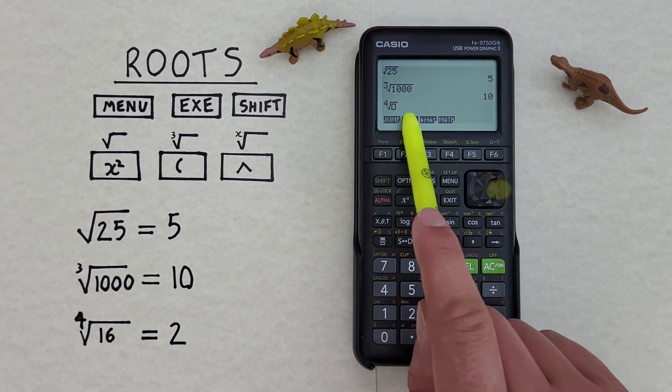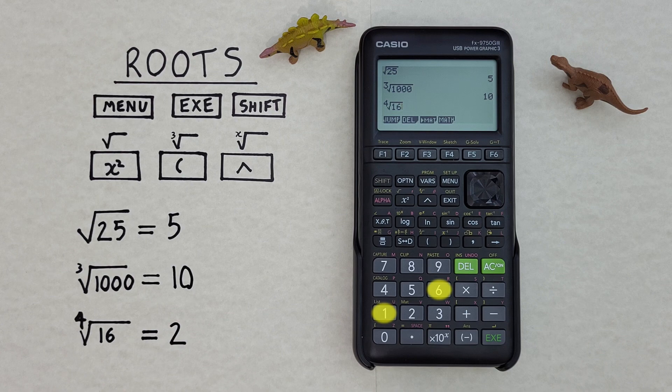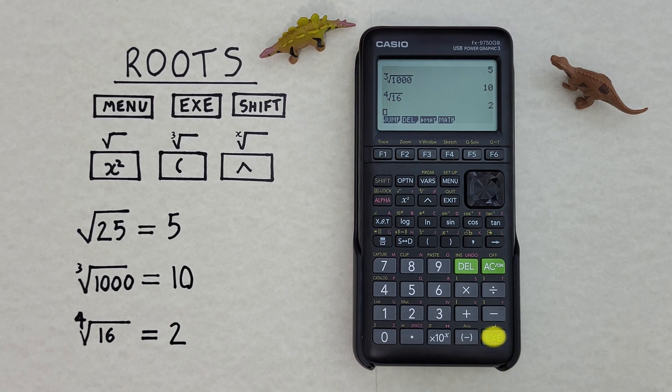And in the second box, we enter 16 because that's what we're finding the fourth root of. And press exe. And we get a result of 2. So the fourth root of 16 is 2.